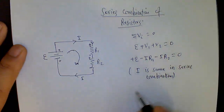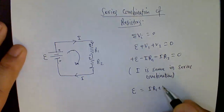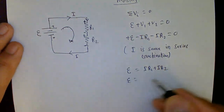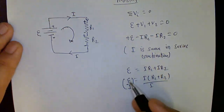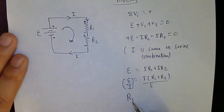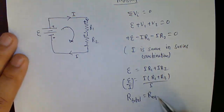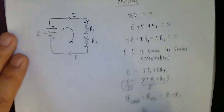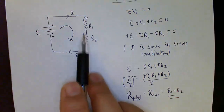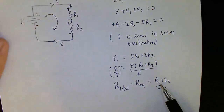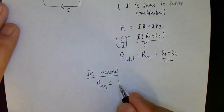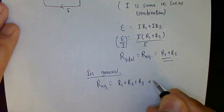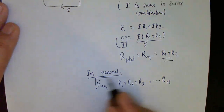Therefore E = IR1 + IR2 = I(R1 + R2). Dividing both sides by I, E/I = R1 + R2, and since E/I is the total equivalent resistance, R_total = R1 + R2. In general, for any series combination, R_equivalent = R1 + R2 + ... + Rn. Simply add all the resistances together to find the total resistance.